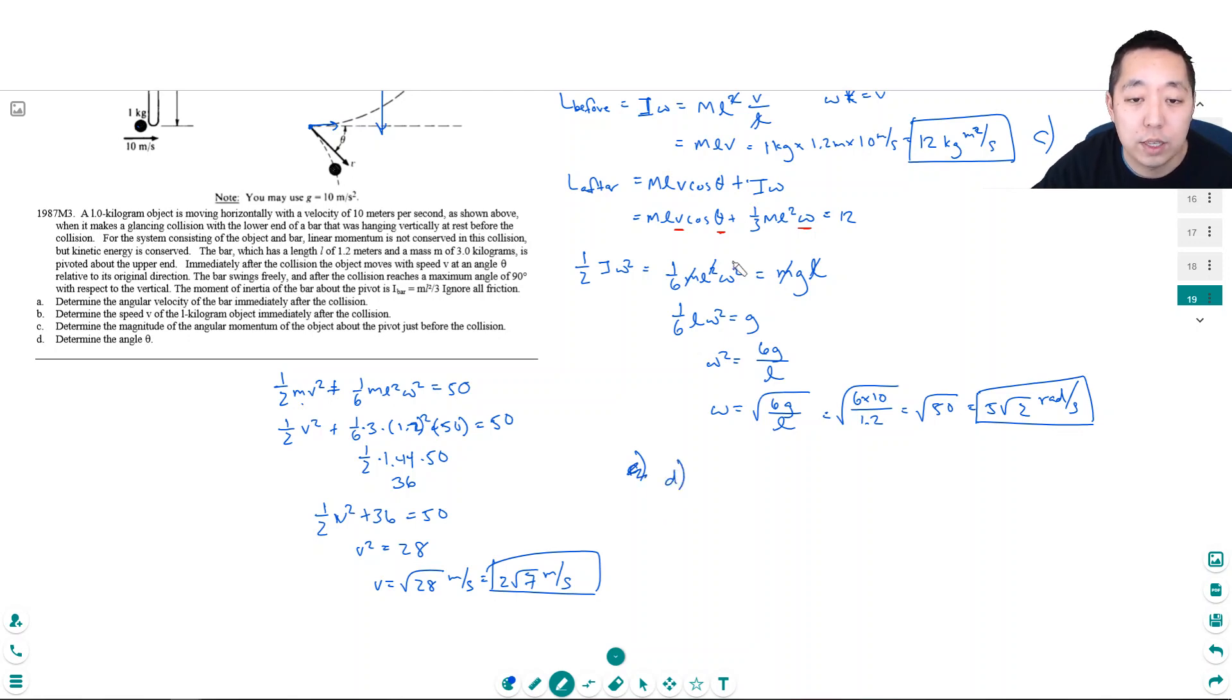And then d, determine angle theta. This is the angle that helps me find theta. So I have mL V cosine theta. And this m is 1 kilogram, by the way. Because this is the ball. Plus 1 third times mL squared omega equals 12. So this is 1. This is 1.2. This is 1.2 times 2 root 7 cosine theta. Plus 1 third m. This is 0.3. L squared, 1.2 squared, omega equals 12.